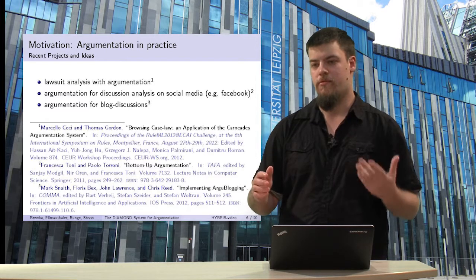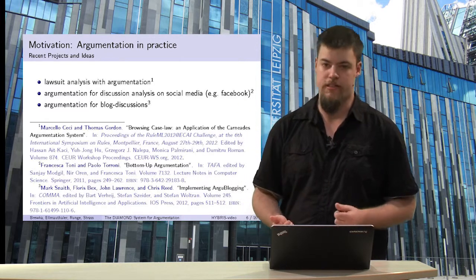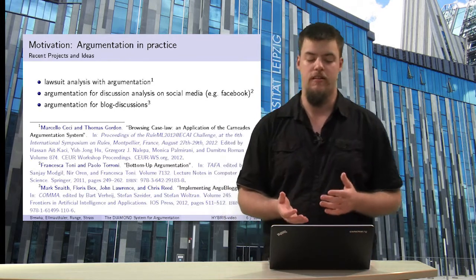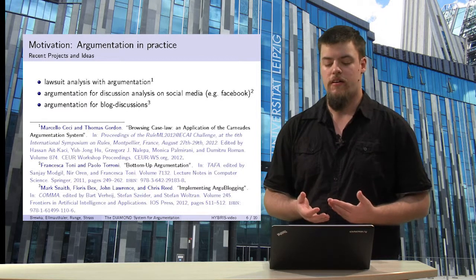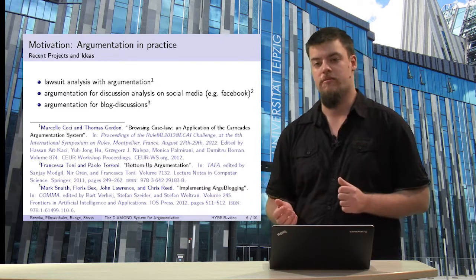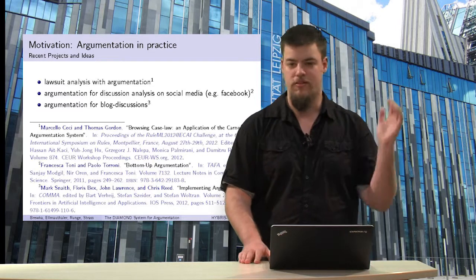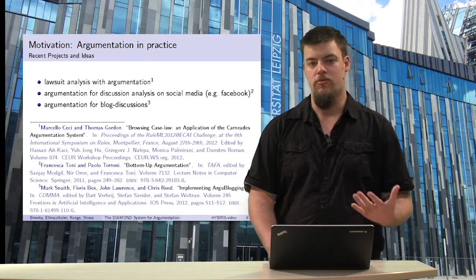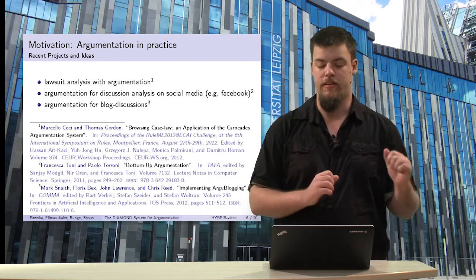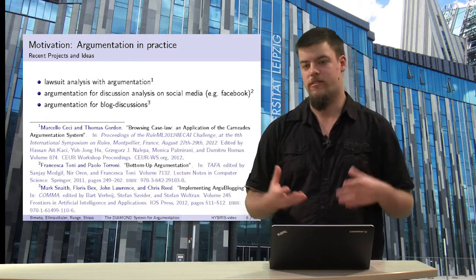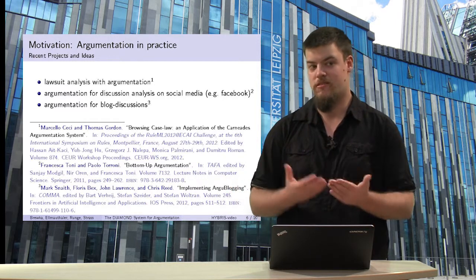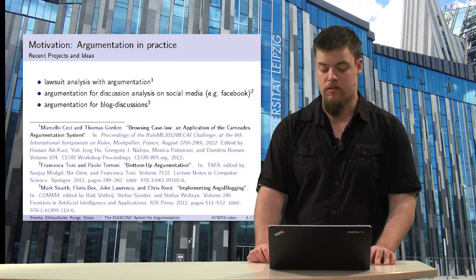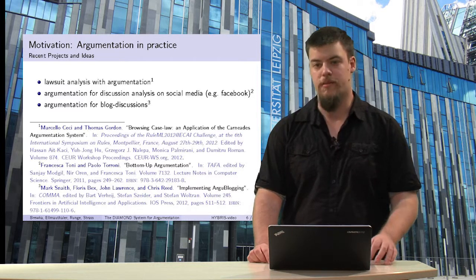With the help of this structure, it can be computed whether there is an argumentation such that the person is guilty or not. The second approach is using argumentation for discussion analysis, used for example on Facebook or other social media. If there is a discussion on whether something is good or bad, the claims are translated into an argumentation framework and then checked whether those arguments hold or not. This is done by Francesco Doni and Paolo Torroni, called bottom-up argumentation, based on assumption-based argumentation.